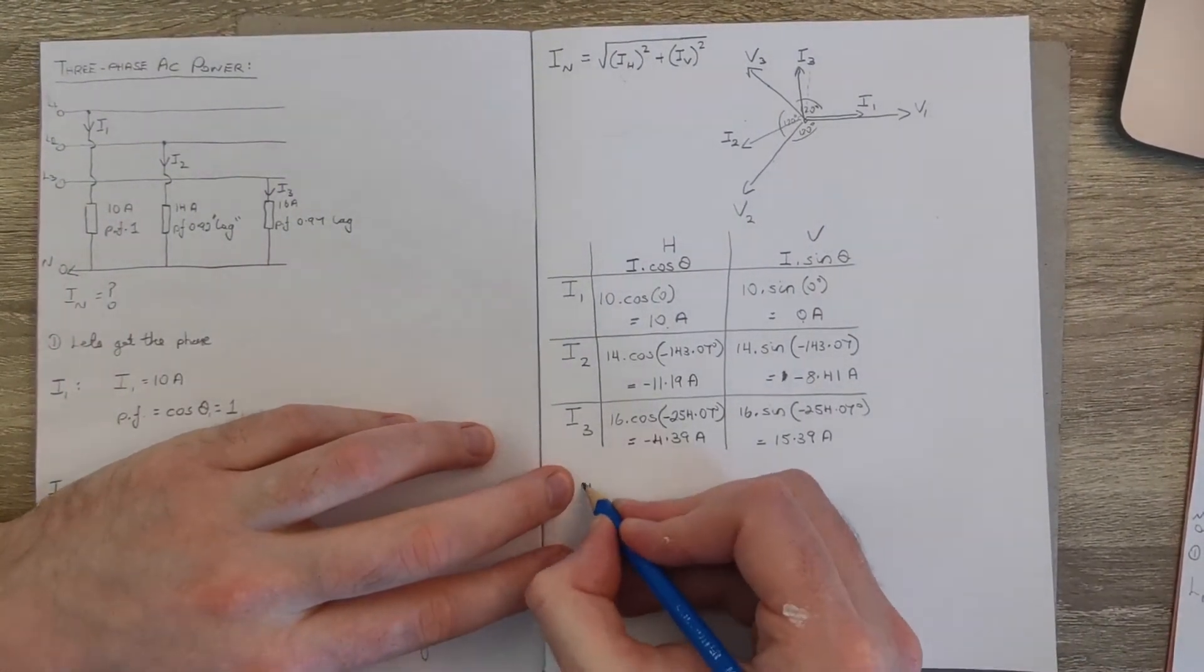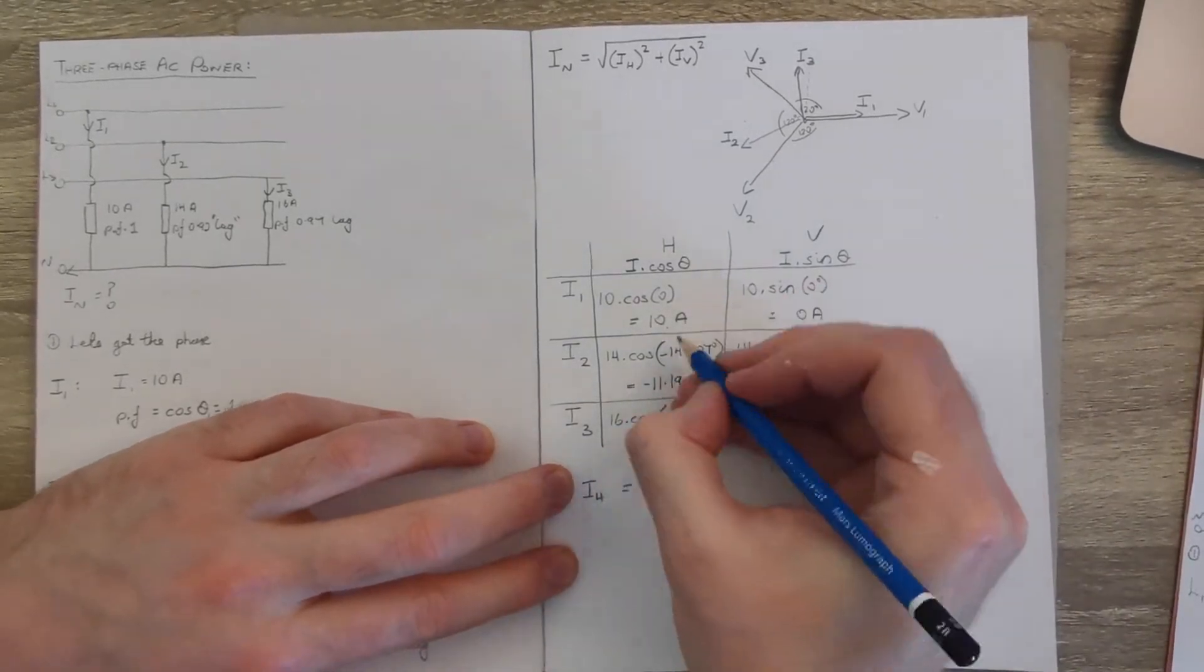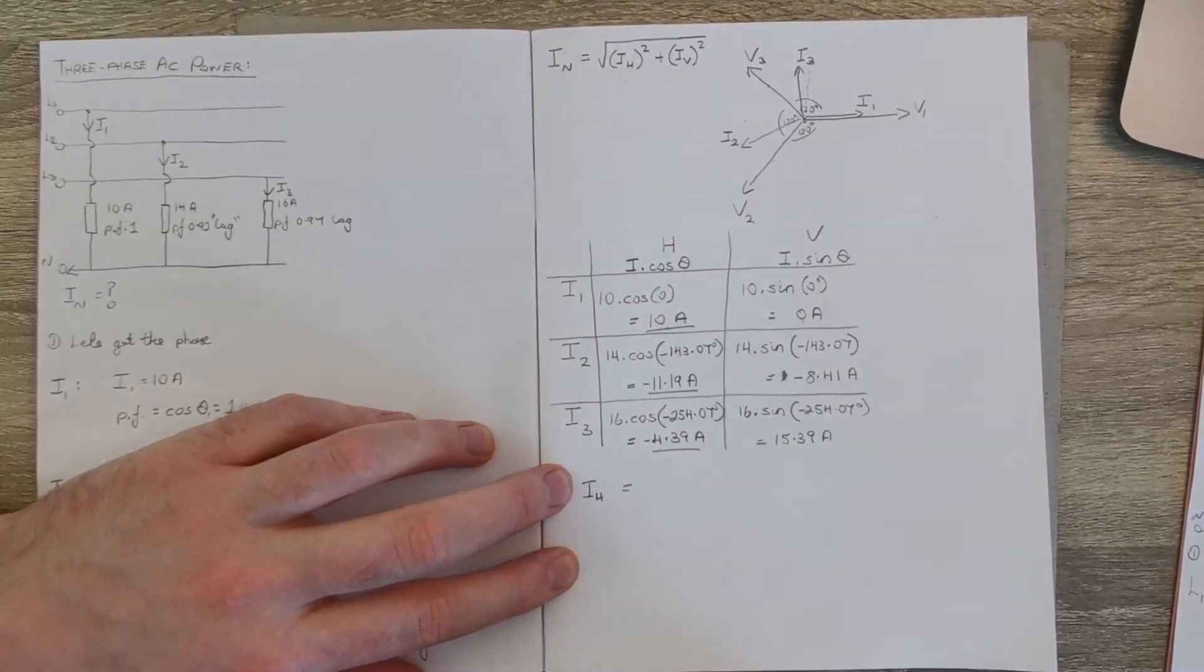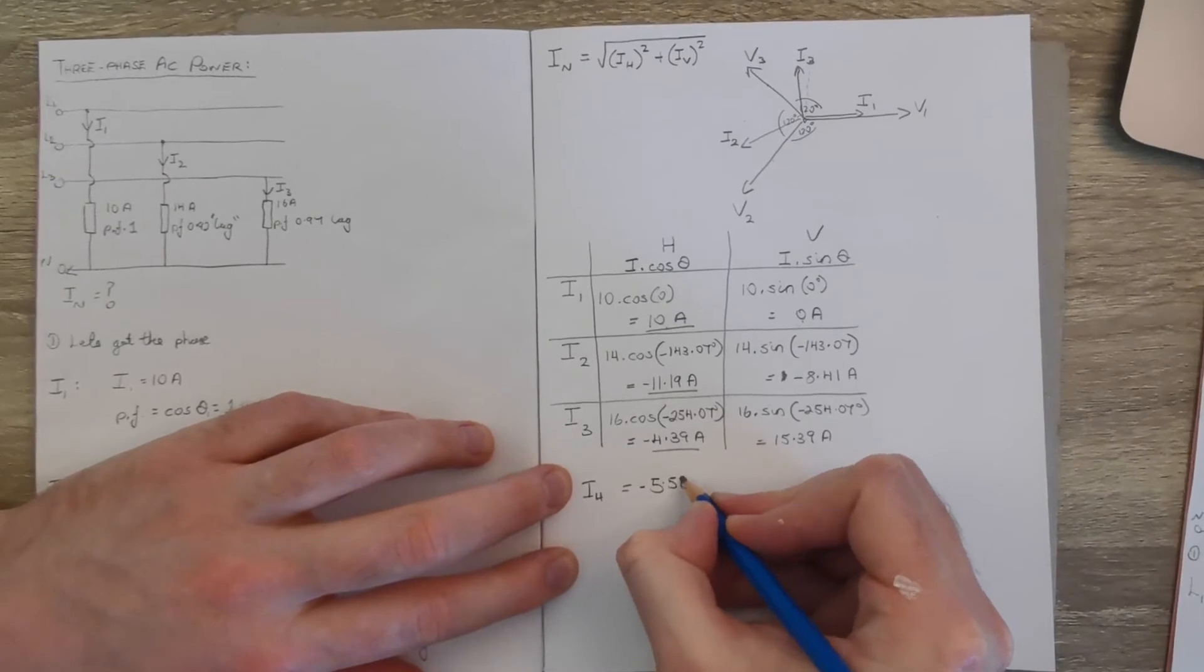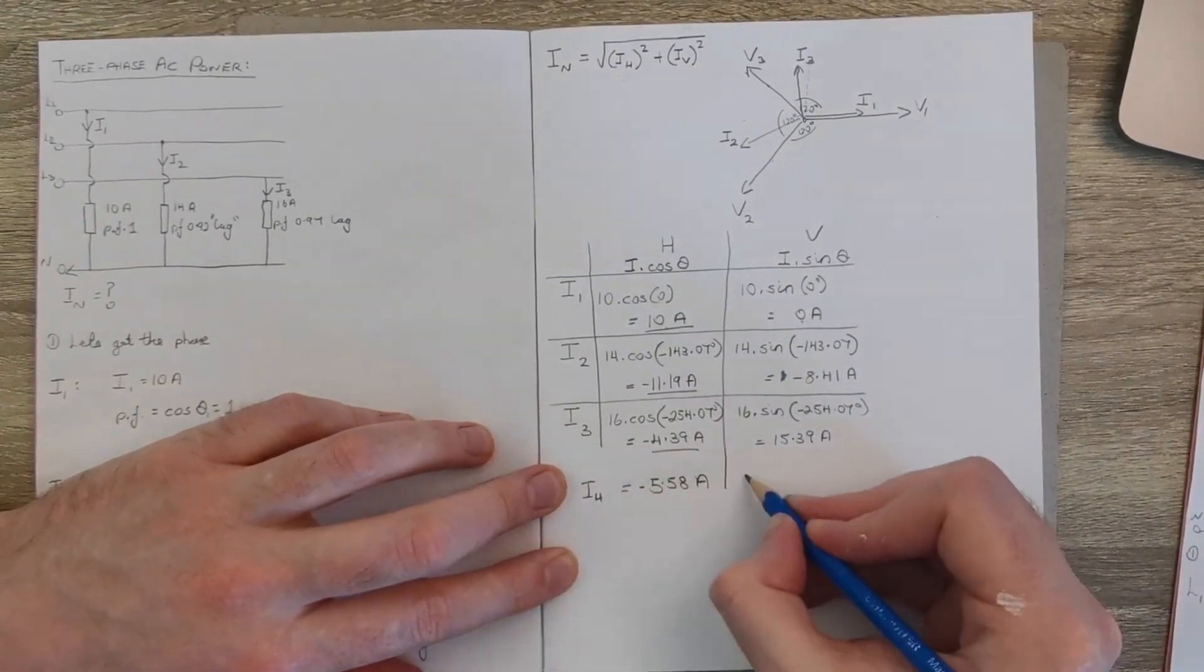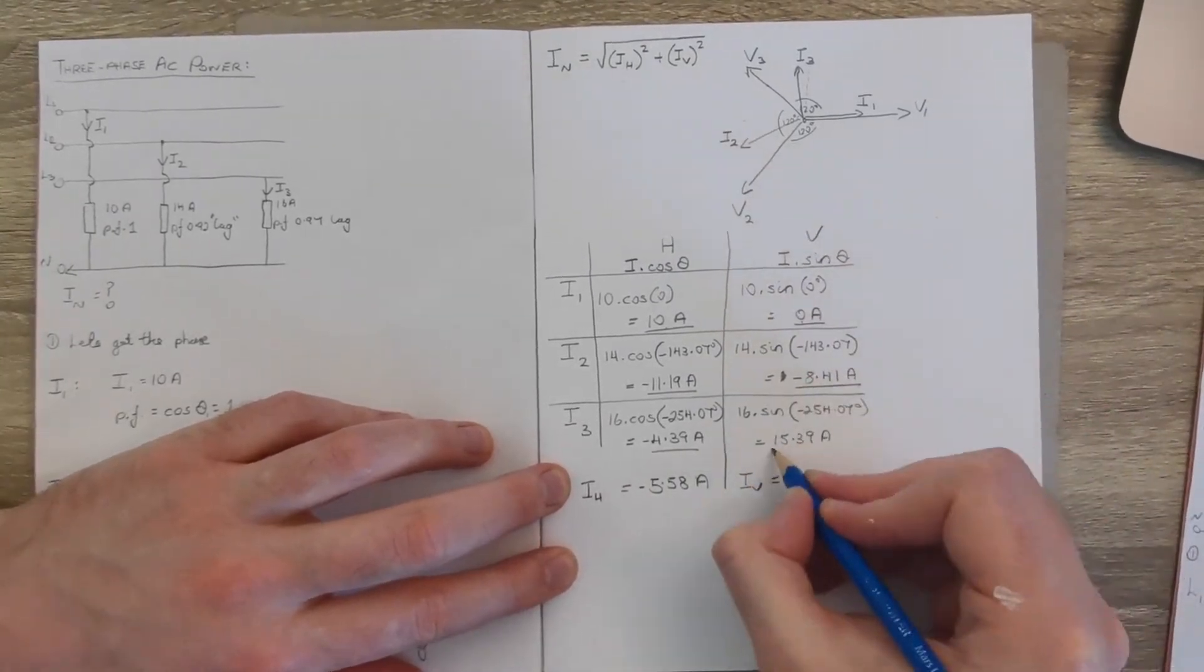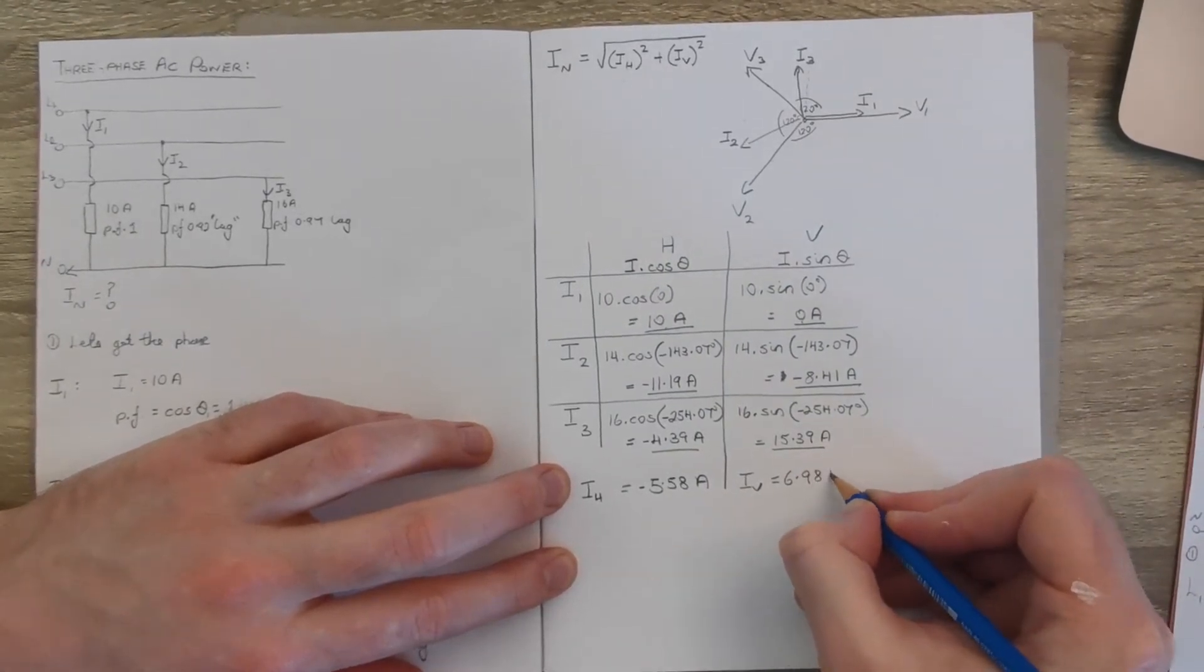Now to get IH, our horizontal, it's just the sum of these three results. That comes out at minus 5.58 amps. And then to get IV, the vertical components, it's just the sum of these three, that comes out at 6.98 amps.